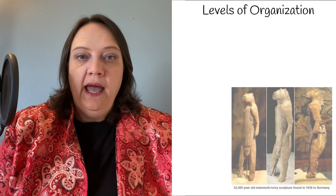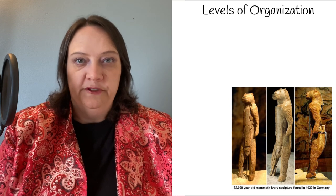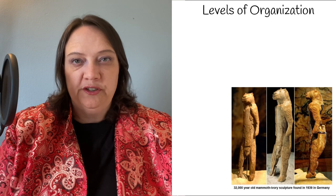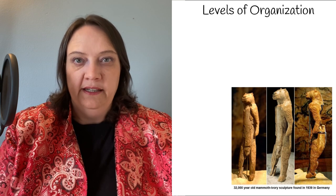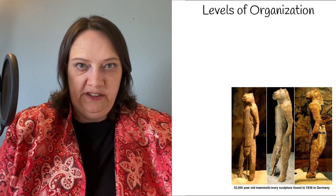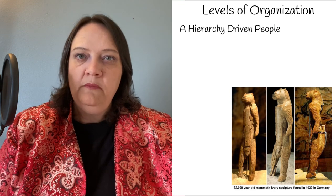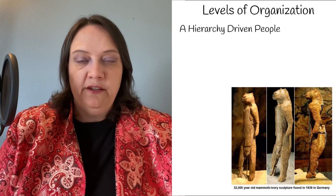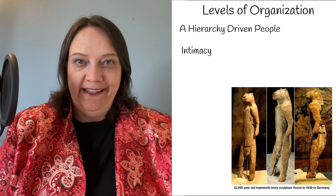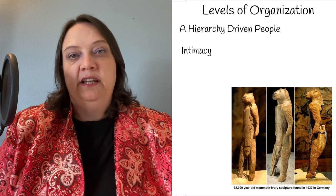Why do religions get organized and what levels of organization exist? The first thing you need to understand is that as a species we love symbology and we love the effects of religion. There was a statuette discovered that's 32,000 years old, discovered in Germany in 1939, which speaks to our species' love of religion. As a species we're hierarchical, so we tend to want to introduce organization into everything we do, including religion. But not all religions are equally organized, and I think that's dependent on intimacy — the more intimate your relationship with your deity, the less organization you need; the more remote your deity is, the more organization there tends to be.